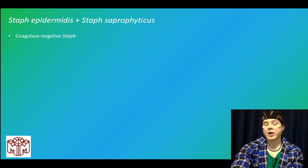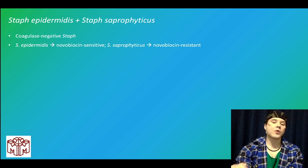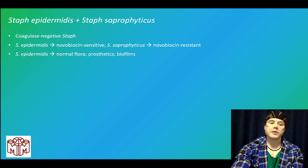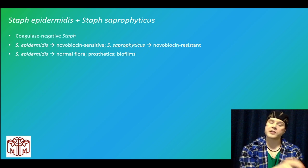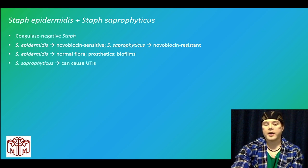Coagulase negative staph refers to staph epidermidis and staph saprophyticus. Staph epidermidis is novobiocin sensitive; staph saprophyticus is novobiocin resistant. Staph epidermidis is normal flora and can cause infections on prosthetic valves, prosthetic joints, and can form biofilms over catheters. Staph saprophyticus simply causes UTIs.